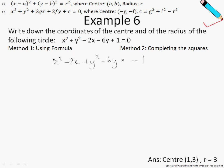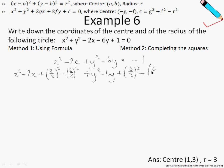Let's perform completing the square for x squared minus 2x first. So x squared minus 2x can be written as x squared minus 2x plus (2/2) squared minus (2/2) squared. The first three terms are in the form a squared minus 2ab plus b squared, so I can write this as (x minus 1) squared. And the remaining term, negative (2/2) squared, is just negative 1.